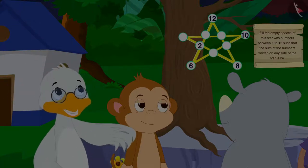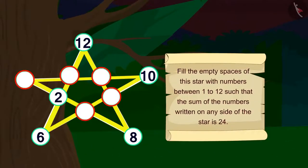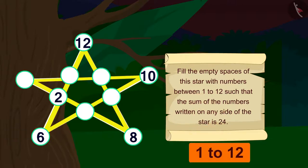Look here. It is written on the top: Fill the empty spaces of this star with numbers between 1 to 12, such that the sum of the numbers written on any side of the star is 24.